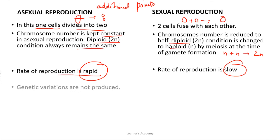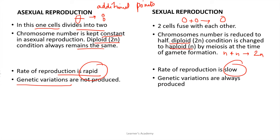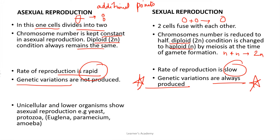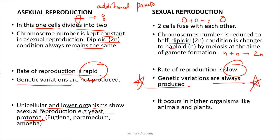Diploid 2N condition is changed to haploid by meiosis at the time of gamete formation, and it is restored during zygote formation. Genetic variations are not produced in asexual reproduction because there is no crossing over, whereas in sexual reproduction genetic variations are always produced because one set of chromosomes is from the male parent and one set is from the female parent, and also there is crossing over that takes place. Asexual reproduction is shown by unicellular and lower organisms, for example yeast, protozoa, euglena, paramecium, and amoeba, whereas sexual reproduction occurs in higher organisms like animals and plants.